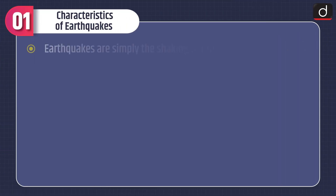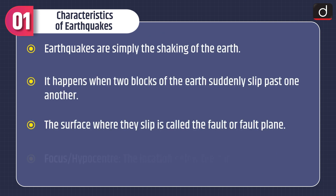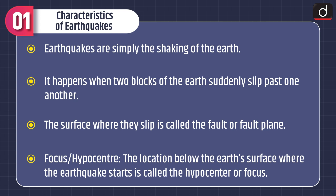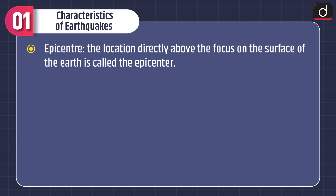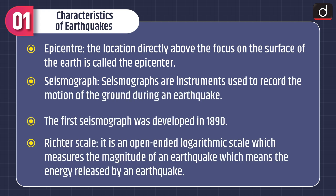First of all, let's discuss about the characteristics of earthquakes. Earthquakes are simply the shaking of the earth. It happens when two blocks of the earth suddenly slip past one another. The surface where they slip is called the fault or fault plane. The focus or hypocenter is the location below the earth's surface where the earthquake starts. The epicenter is the location directly above the focus on the surface of the earth.